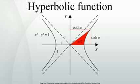Hyperbolic functions for complex numbers. Since the exponential function can be defined for any complex argument, we can extend the definitions of the hyperbolic functions also to complex arguments. The functions sinh(z) and cosh(z) are then holomorphic.